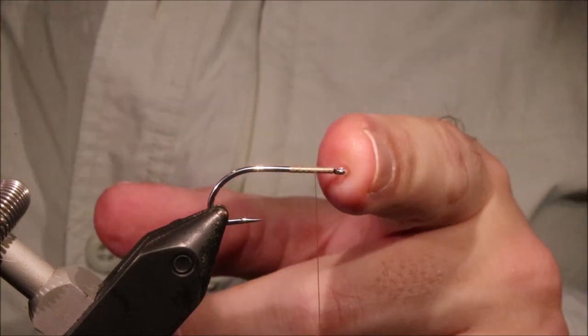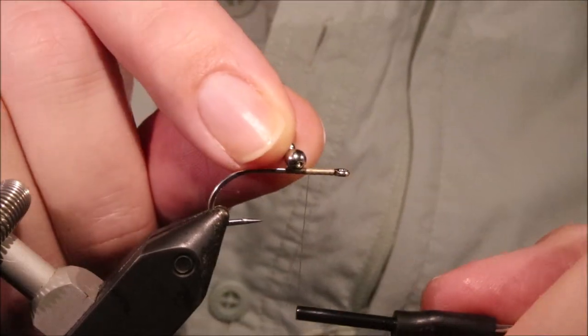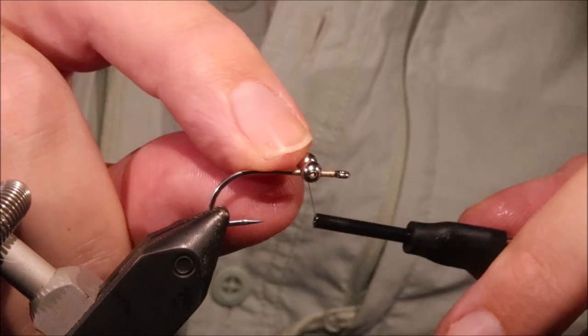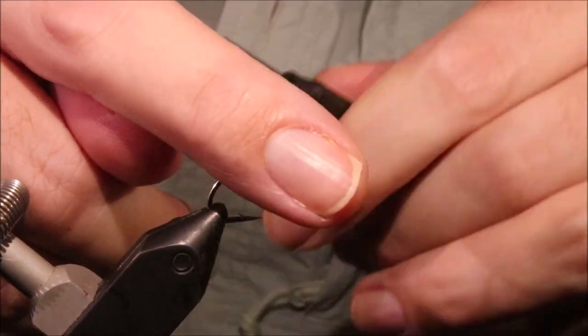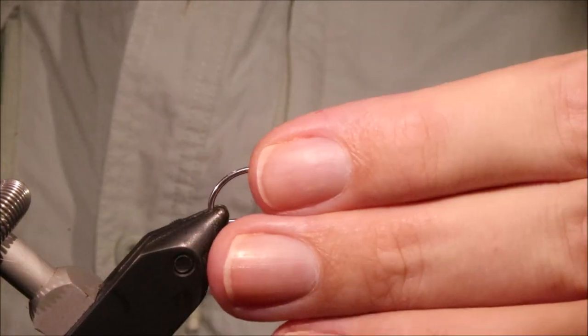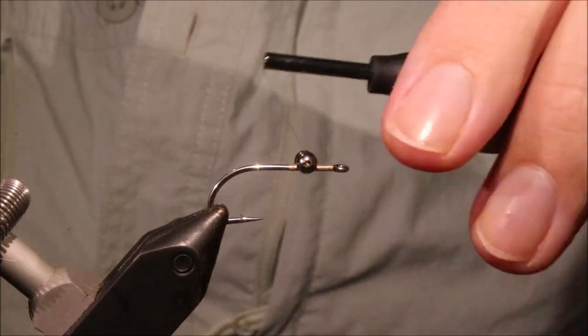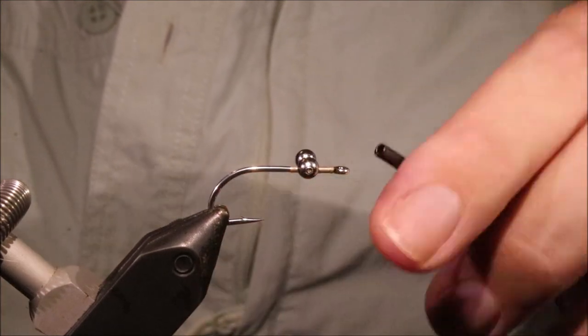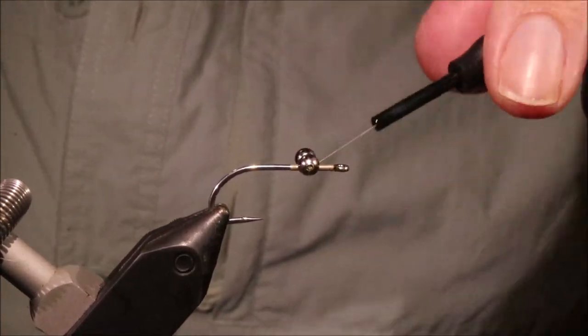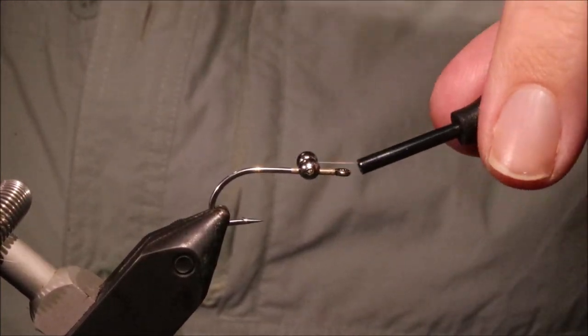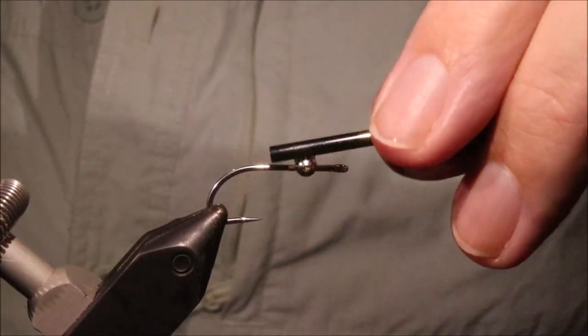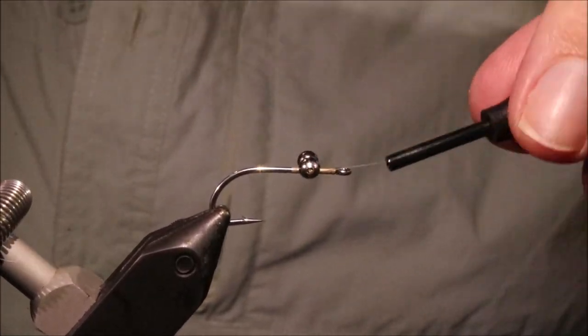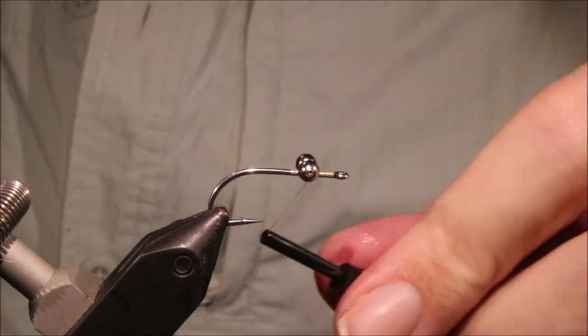I've got my hook in my vise, it's a size 8 Gamakatsu SL11 3H, it's a great hook, nice and strong, ideal for the flats. And I would say you can tie this smaller, I wouldn't go much bigger, maybe up to a 6 but that's plenty big enough.